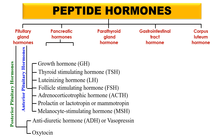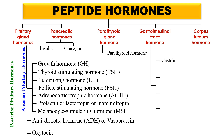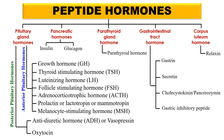Pancreatic hormones include insulin and glucagon. The parathyroid gland secretes parathyroid hormone. Gastrointestinal hormones include gastrin, secretin, cholecystokinin or pancreozymin, and gastric inhibitory peptides. Finally, the corpus luteum secretes the hormone relaxin. So all these hormones are the peptide hormones. In the next slides I will discuss the structure and function of all of these hormones.